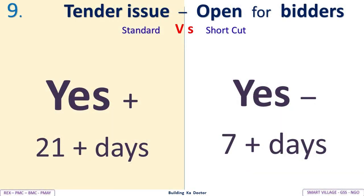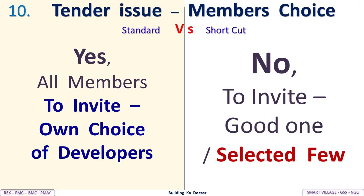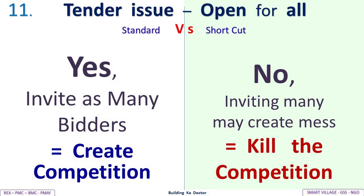Tender issue open for bidders: Standard allows 21-plus days; shortcut only 7-plus days. Members' choice in tender issue: Standard allows all members to invite their own choice of developers; shortcut invites only a selected few. Open to all bidders: Standard invites as many bidders as possible to create competition; shortcut avoids inviting many, claiming it may create a mess, which kills competition.